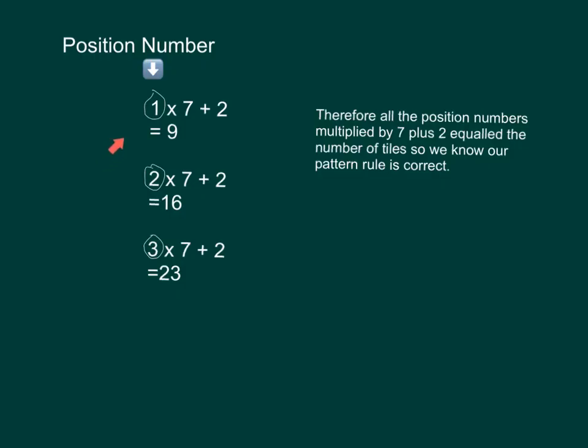To double check, we did 1 for the position number, 7 for the multiplier, and 2 for constant. That got us 9. We also did it for the second and third position number, which got us 16 and 23.